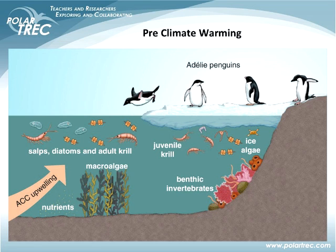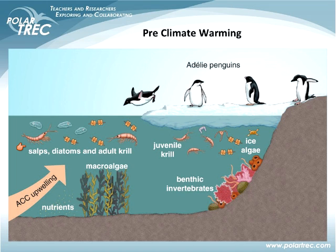This cartoon shows the Antarctic Peninsula in its traditional state, as it has been for many millions of years before climate warming — annual sea ice present, Adelie penguins very numerous, lots of krill feeding on the underside of sea ice, a rich community of animals on the seafloor, forests of macroalgae, and the Antarctic circumpolar current on the left bringing rich nutrients into this system, making it one of the richest in the world.